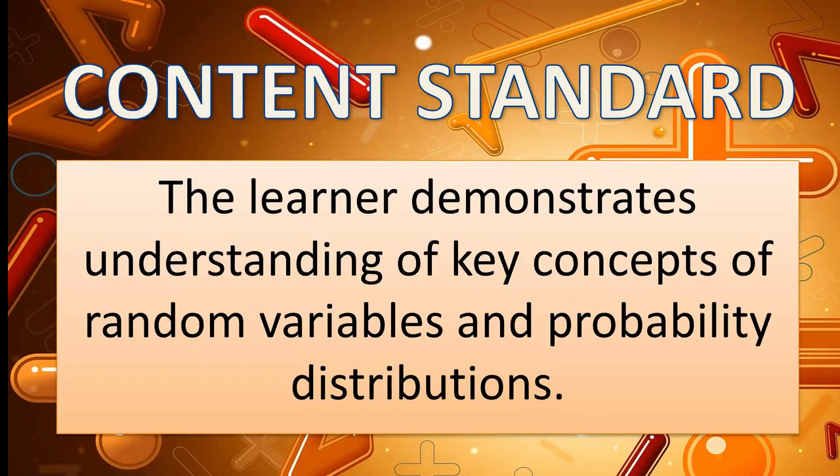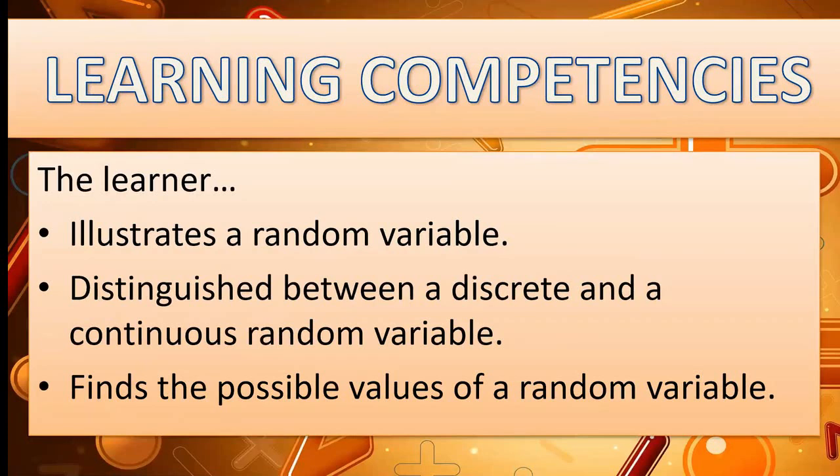It says here that the learner must demonstrate understanding of key concepts of Random Variables and Probability Distribution. Now, these are the learning competencies students must achieve at the end of this lesson. First, the learner must illustrate a Random Variable followed by distinguishing between a Discrete and Continuous Random Variable. Lastly, the learner will know how to find the possible values of a Random Variable.